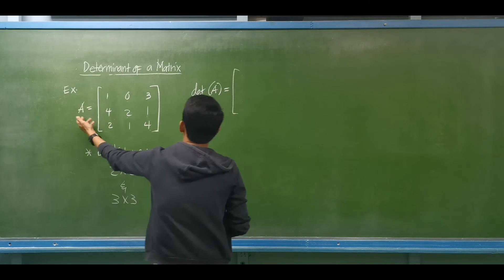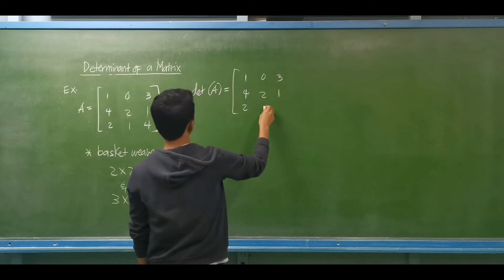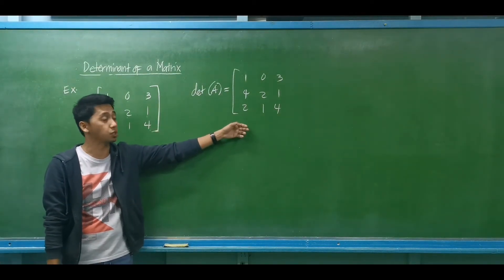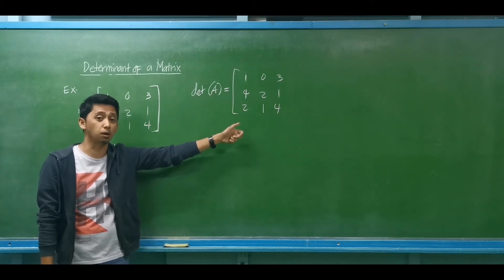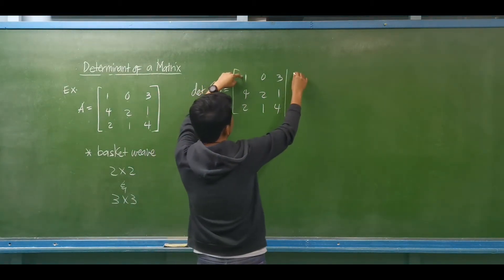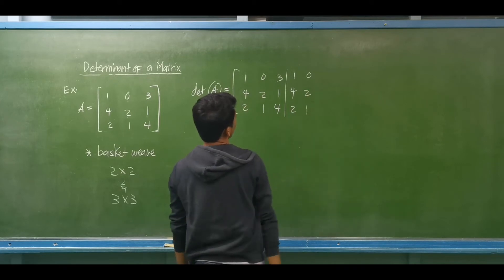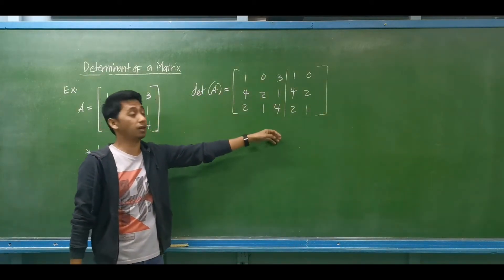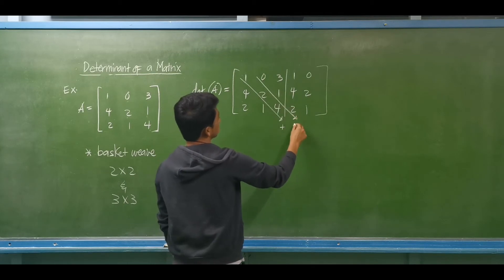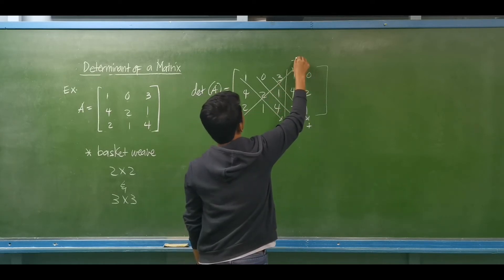The original matrix elements are: 1, 4, 2 in the first column; 0, 3, 2 in the second; and 1, 1, 4. To make it 3 by 5, we rewrite the first and second columns. The first column is 1, 4, 2 and the second column is 0, 2, 1. Then we get the product of the diagonal elements: downward to the right is positive, upward to the right is negative.